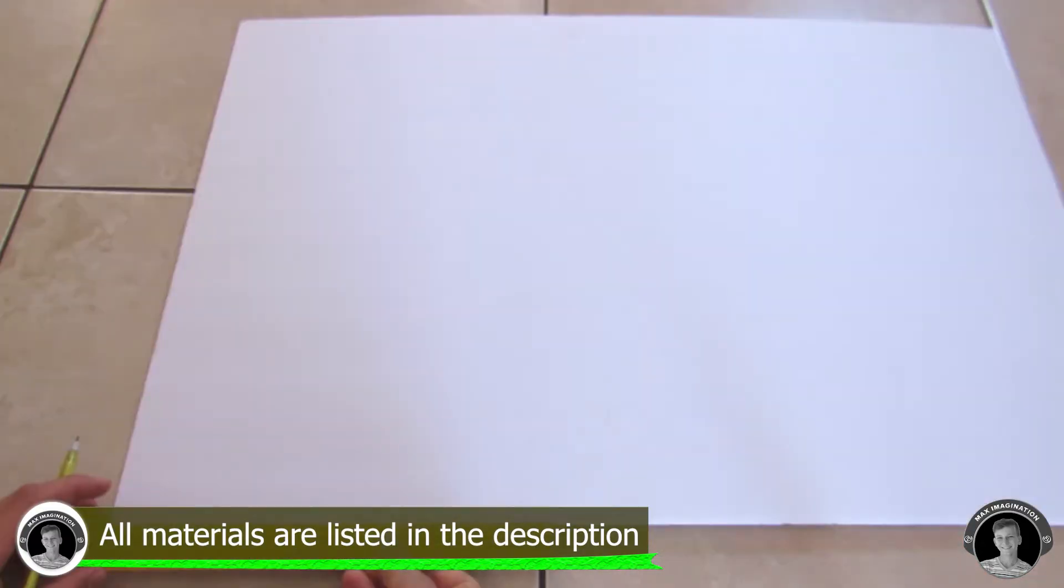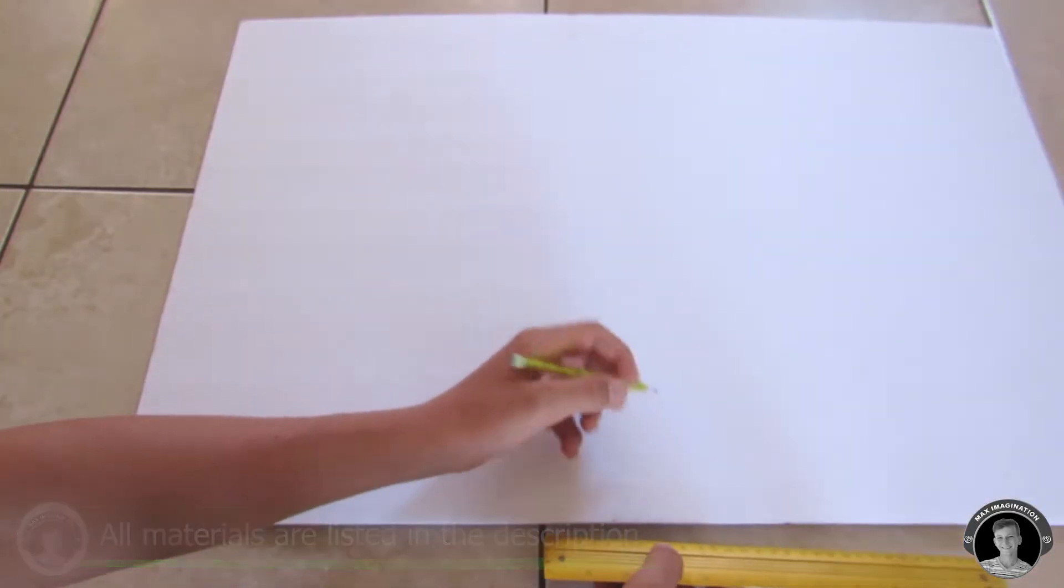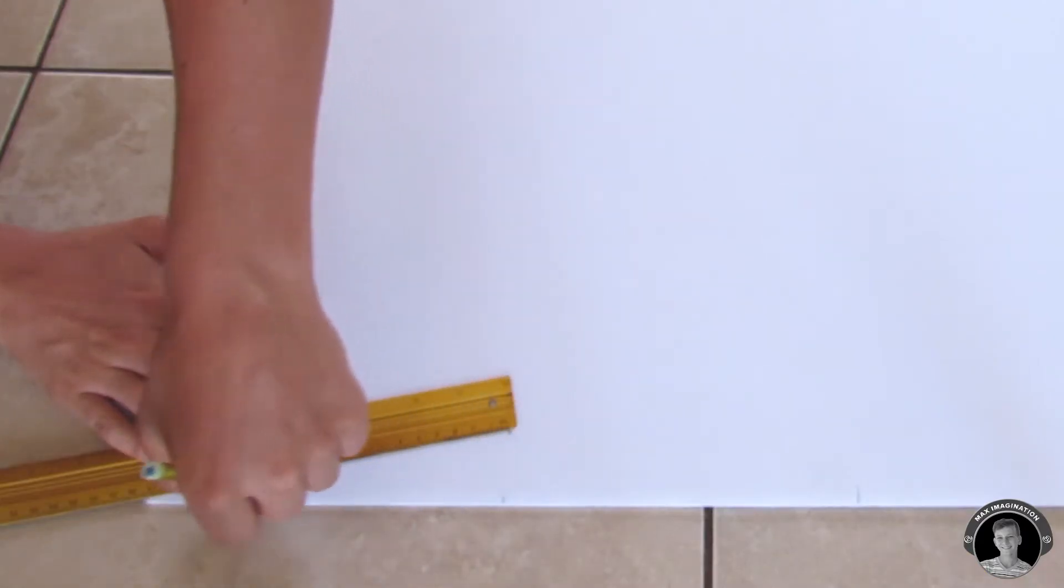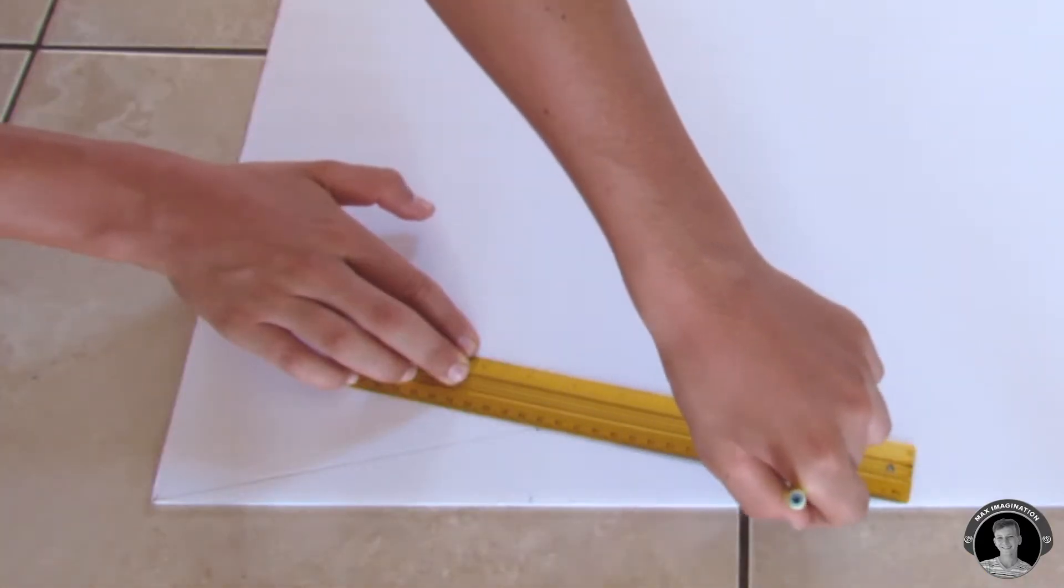For the plane itself, I'm going to use some foam poster board which you can find at a dollar store. Begin by outlining the shape of the Zagi wing. The wingspan of mine is about 38 centimeters.